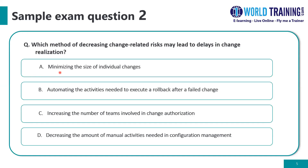Option A — minimizing the size of individual changes — is a good thing, so that would not be the answer. Similarly, automation as in option B is also good to speed up. Option D — decreasing the amount of manual activity — is also good and can speed up. All these options also decrease change-related risks. But option C, increasing the number of teams involved in change authorization, is the opposite — it is a method which can lead to delays, because the more teams involved, the further delays can happen in authorization.